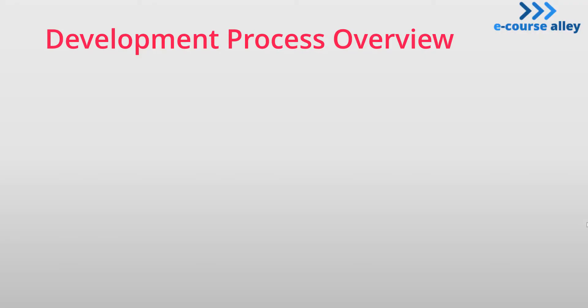Let's look at an overview of how we will proceed to build an example Storyline 3 course. We will start by building the slide layout in Storyline 3. We will use the storyboard to guide us every step of the way through this process, so be sure to have downloaded the storyboard I provide to create this example course about learning how to juggle.